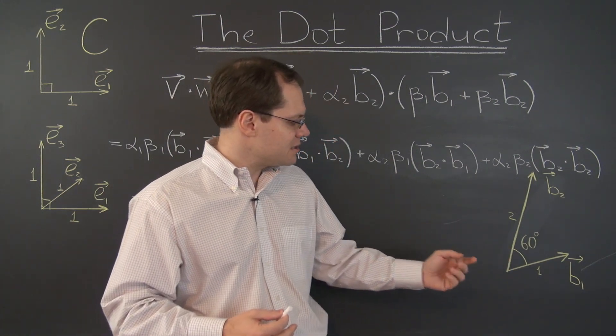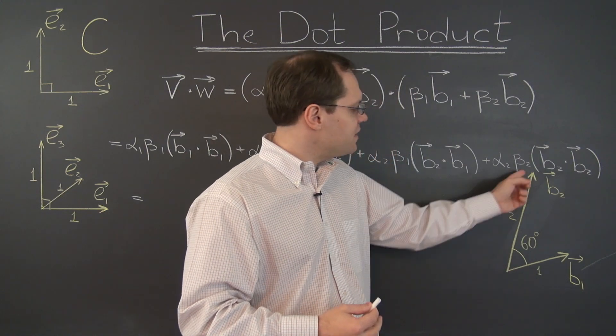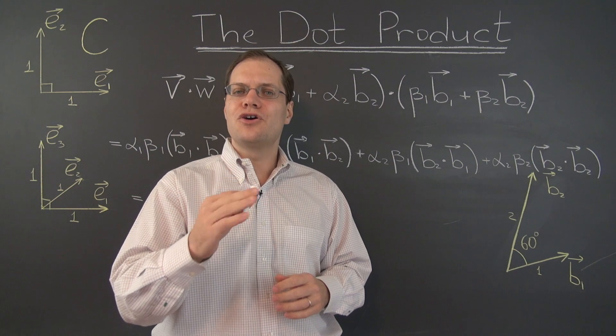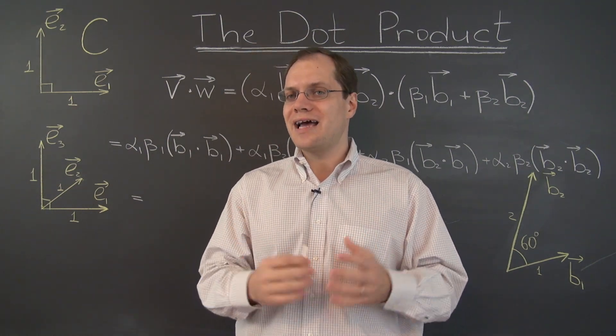Like this basis for example: it has one unit vector, one vector of length 2, and the angle between them is 60 degrees. And for future reference, cosine of 60 degrees is 1 half.